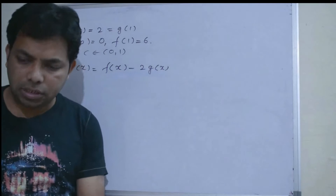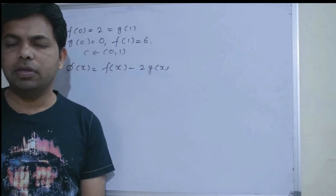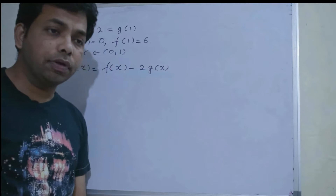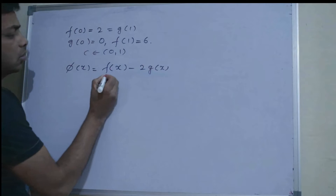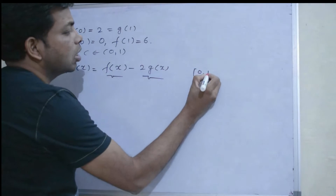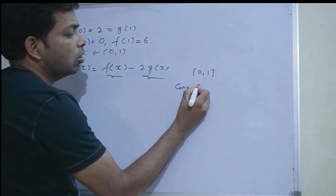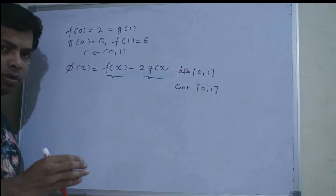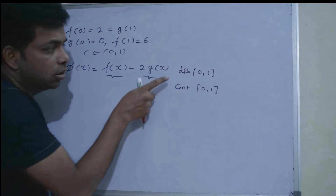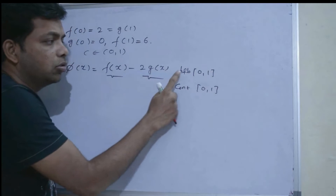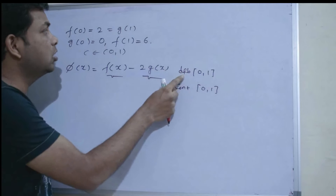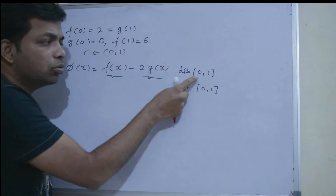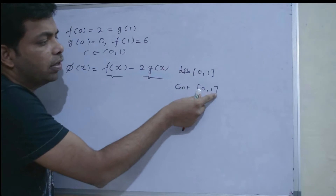In the problem, f and g are differentiable functions on closed interval [0, 1]. Therefore, f is differentiable on [0, 1], and obviously it is continuous on [0, 1] as well, because every differentiable function is always continuous — differentiability implies continuity.